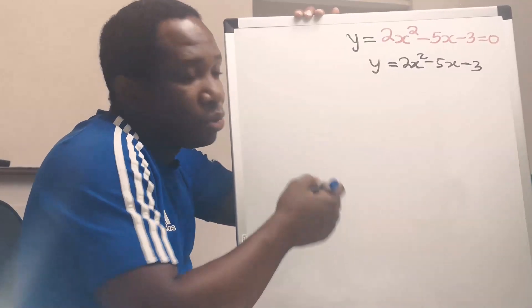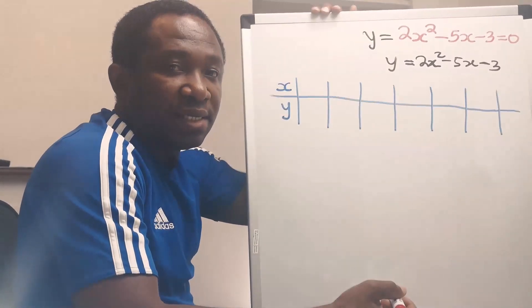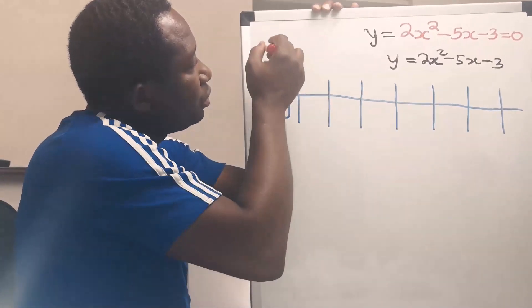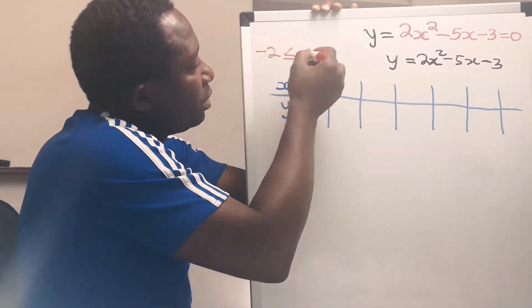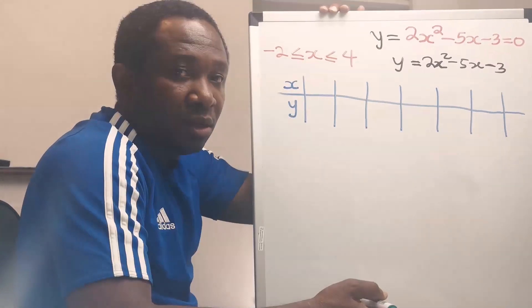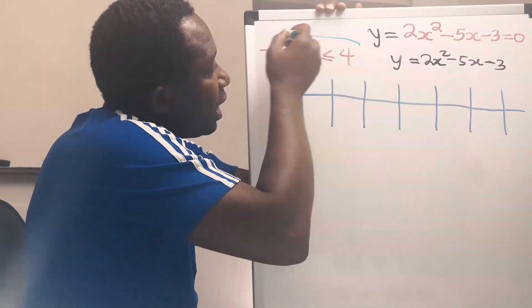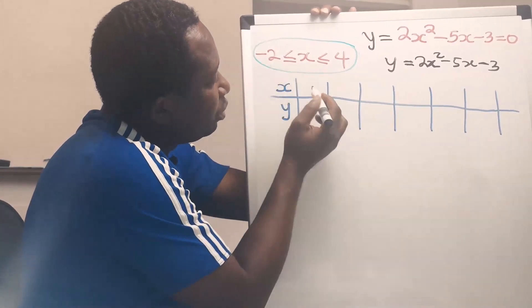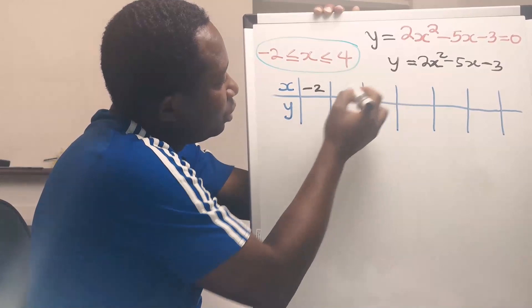We're going to draw a table and consider a range of integers. Here, I will choose from minus 2 to 4. You are free to choose any suitable range of values, and I will now input these values from minus 2 to 4.